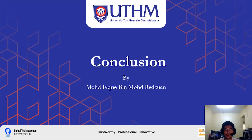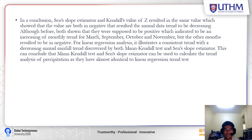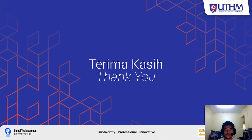In conclusion, the Sen's slope estimator and Mann-Kendall Z value resulted in the same outcome — both negative — resulting in a decreasing annual data trend. However, both showed positive values indicating an increasing monthly trend for March, October, September, and November, while the other months were negative. For linear regression analysis, it illustrates a consistent trend with the decreasing annual rainfall trend discovered by both the Mann-Kendall test and Sen's slope estimator. This concludes that the Mann-Kendall test and Sen's slope estimator can be used to calculate trend analysis of precipitation, as they are almost identical to the linear regression trend test. That is all from us. Thank you.